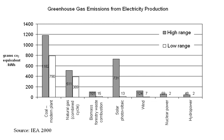The Swedish utility Vattenfall did a study in 1999 of full life cycle emissions of nuclear, hydro, coal, gas, solar cell, peat, and wind — all the energy sources that the electricity utility actively has experience using to generate electricity. The findings of their study showed that nuclear power produced 3.3 grams of carbon dioxide per kWh of power. This compares to 400 for natural gas and 700 for coal, according to this study. The study also concluded that nuclear power produced the smallest amount of CO2 of any of their electricity sources.